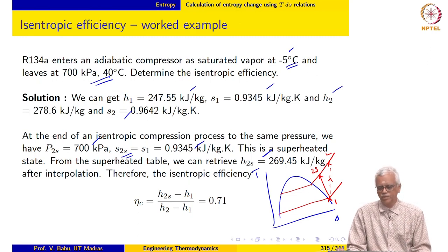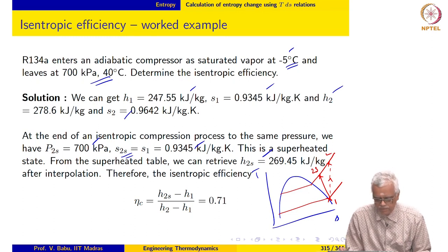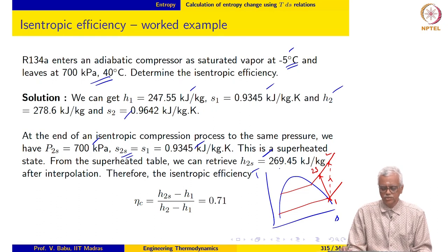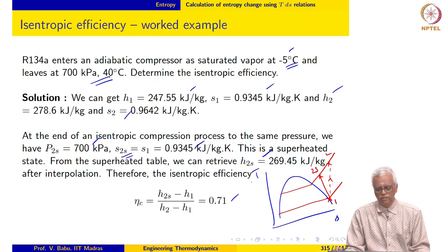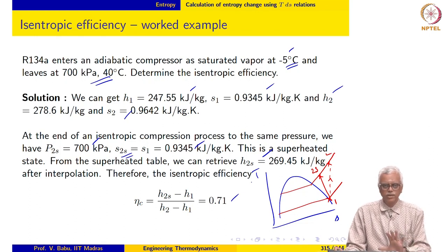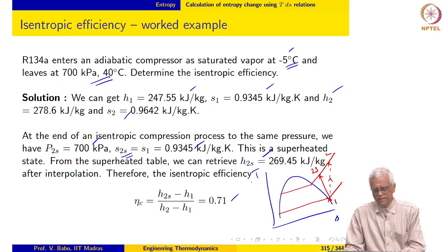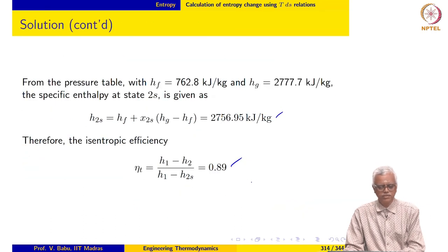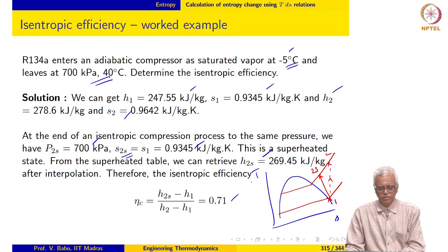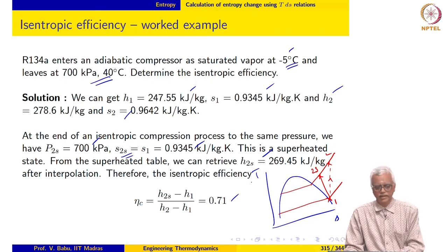Most of the time such data may not be available directly in the table, so interpolation or property software is needed. We get H2S to be approximately 269 kJ/kg and the isentropic efficiency evaluates to 0.71. These values are typical of actual devices: turbine isentropic efficiencies are usually around 0.9 to 0.95, while compressor efficiencies depending on the working substance typically range from about 0.75 to 0.9.